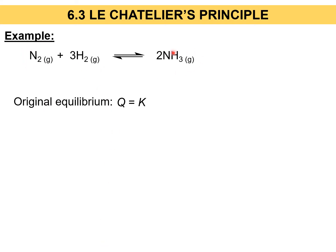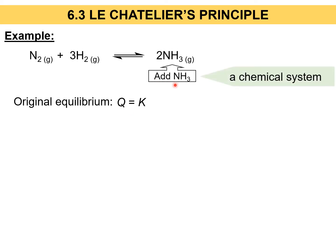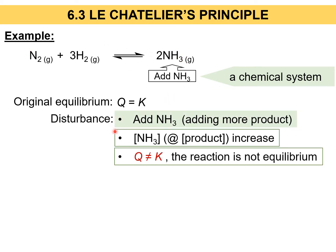For example, if you have this reversible chemical reaction — sometimes called a chemical system — originally they are at equilibrium. But what if we disturb its equilibrium by adding more product, more NH3? We introduce NH3 into the chemical system. When we add it, suddenly the product becomes more abundant — the concentration of the product will increase — and the system will no longer be at equilibrium.